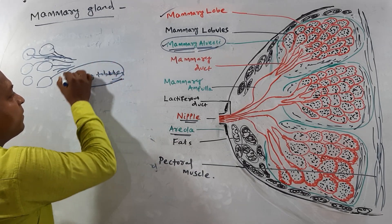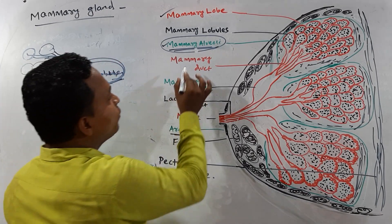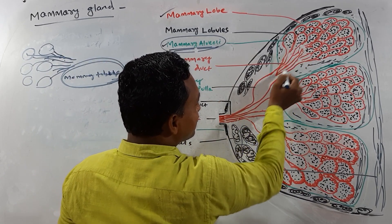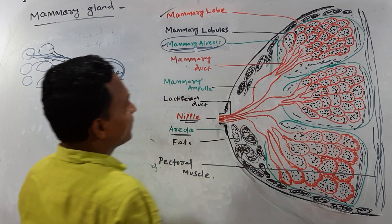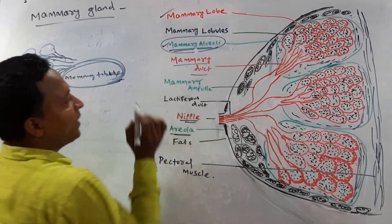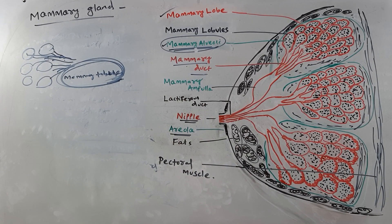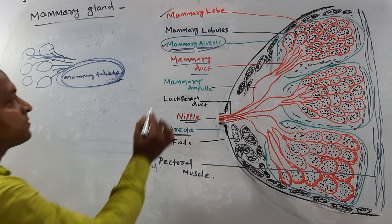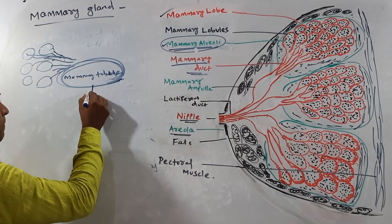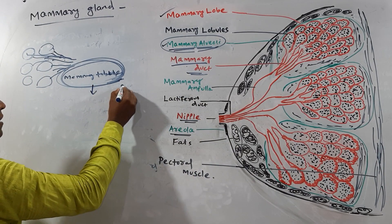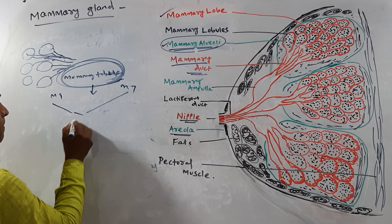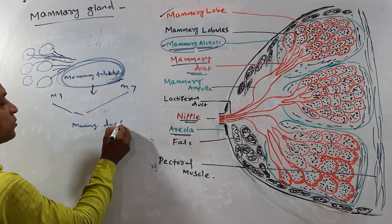When a number of mammary tubules are combined, they form mammary ducts. These mammary ducts are then combined to form larger mammary ducts.